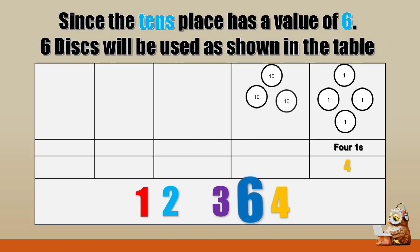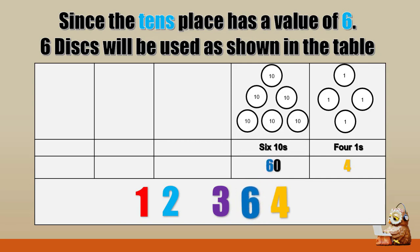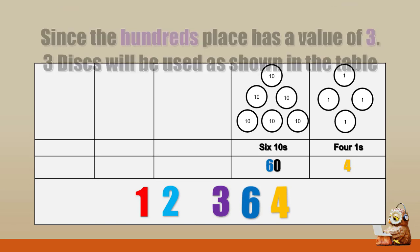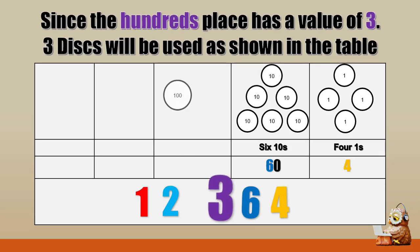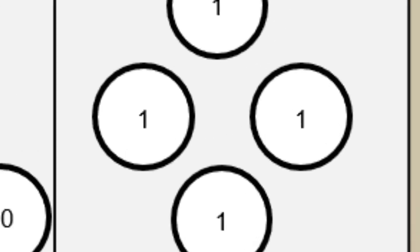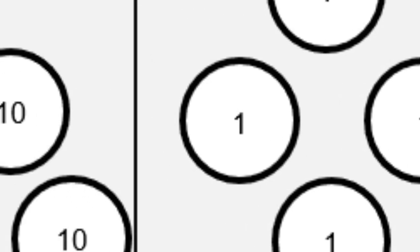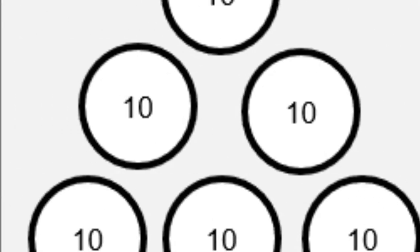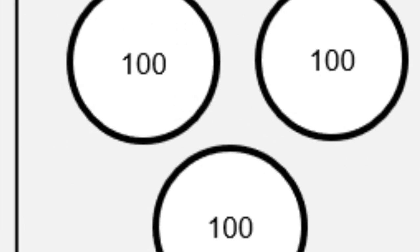6 is in the 10's place, therefore 6 disks with a mark of 10 will be used. 3 is in the 100's place, therefore 3 disks with a mark of 100 will be used. Also notice that the mark in the disks are numbers that represent the place value. 1 for the 1's place, 10 for the 10's place, 100 for the 100's place and so on.